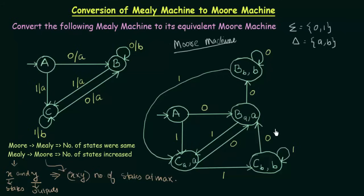You can also draw the transition table for this — just as we used to draw for the Moore Machine. One thing to notice is that all states in the Moore Machine have an output associated, except for starting state A. This is because in the original Mealy Machine, state A had no incoming edges, only outgoing ones — so no output was assigned to it. You could assign either A or B; it does not matter. That's how you convert a Mealy Machine to its equivalent Moore Machine. Thank you for watching, and see you in the next one with more examples.